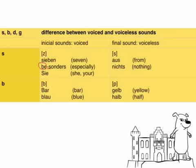Please repeat after me: 'Sieben', 'besonders', 'Sie'. The S, however, is voiceless at the end. Note the difference between Z and S — there is no voice behind this S. At the end of a word: 'aus', 'nichts'. There is no voice behind the S.